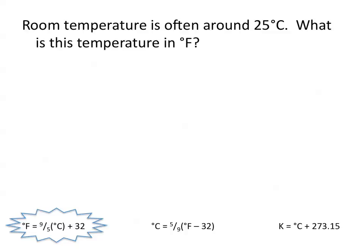We can use the equation for Fahrenheit, which is equal to 9/5 times the temperature in Celsius plus 32. So Fahrenheit equals 9/5 times 25, which is our given temperature in Celsius, plus 32. So 25 degrees Celsius is equal to about 77 degrees Fahrenheit.